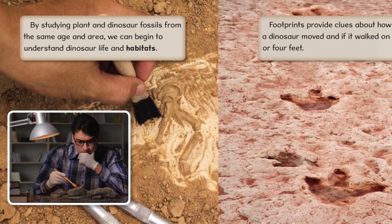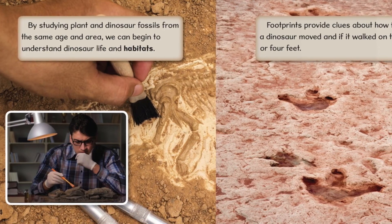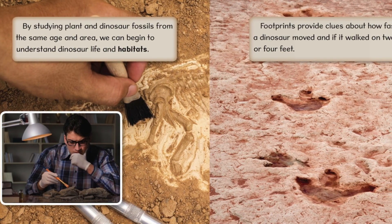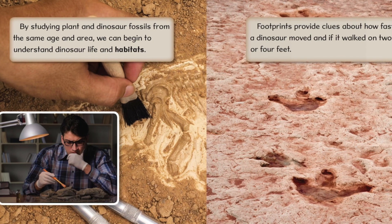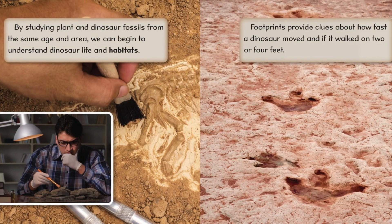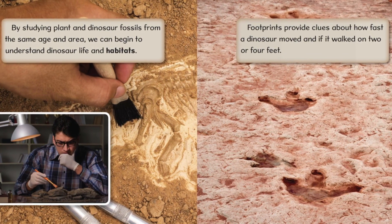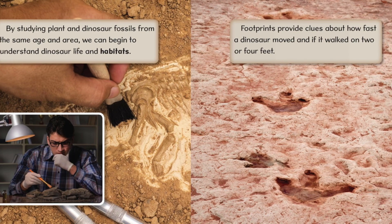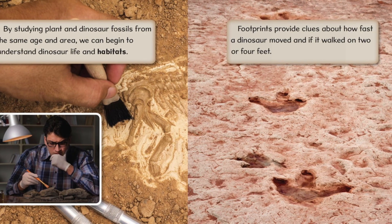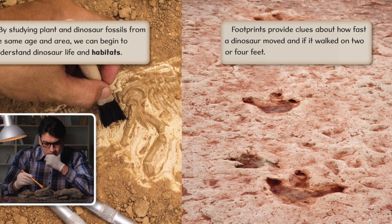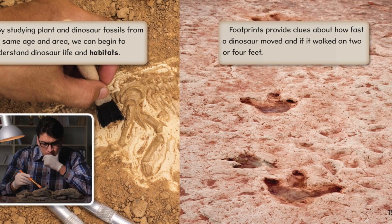By studying plant and dinosaur fossils from the same age and area, we can begin to understand dinosaur life and habitats. Footprints provide clues about how fast the dinosaur moved and if it walked on 2 or 4 feet.